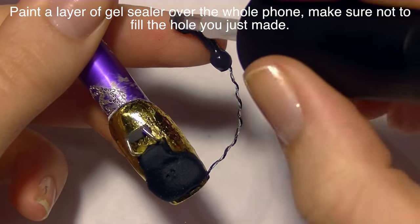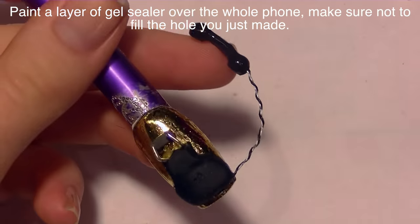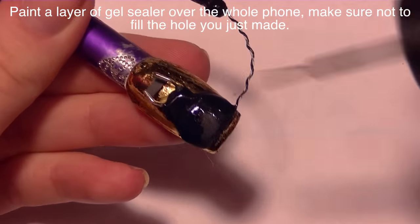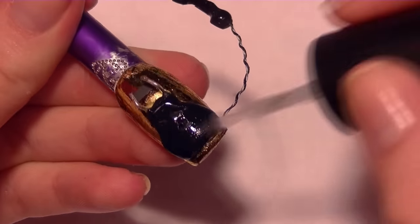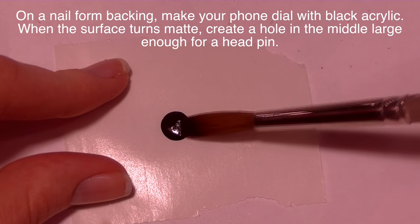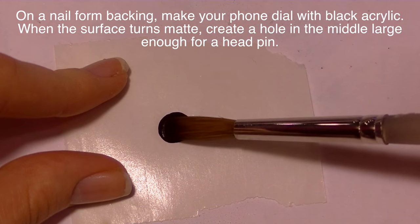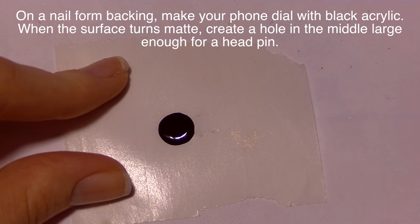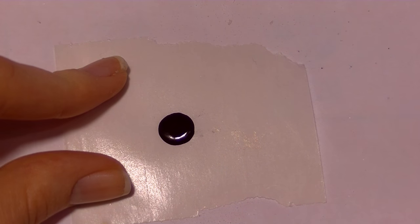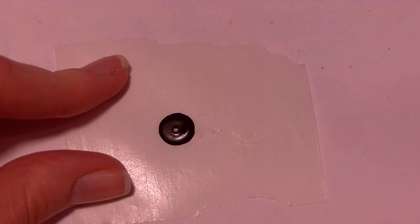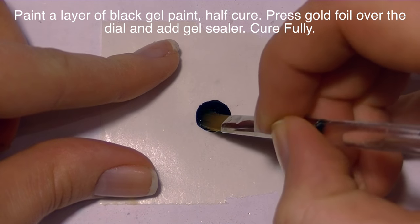I'm going to now apply gel sealer over the top of the telephone receiver and also over the phone base, leaving that little hole we poked. We don't want to fill that up. Now on a nail form backing I'm going to be creating my phone dial. I'm going to first just create a circle of black acrylic and once again I'm going to be poking a hole in the center of it. I'm going to take my tweezers, dip that in black acrylic so it doesn't stick, and make my hole.